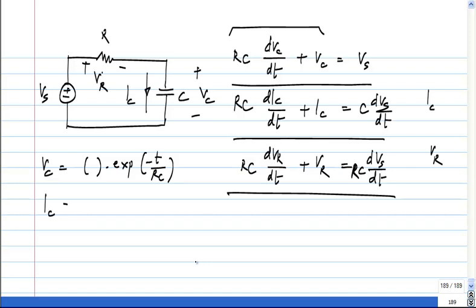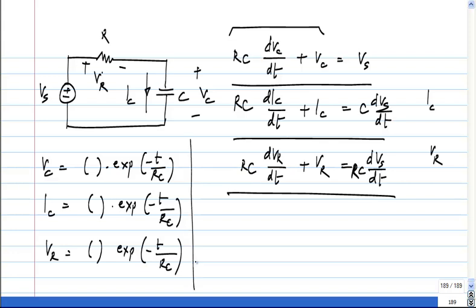And similarly, Ic will also be the same way and Vr will also be the same way. These are the natural responses or transient response or the homogeneous solution. Now, this is a general property of any circuit and this is nothing to do with the first order differential equation either.